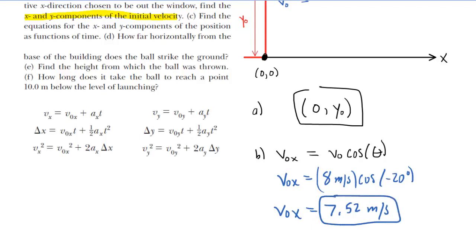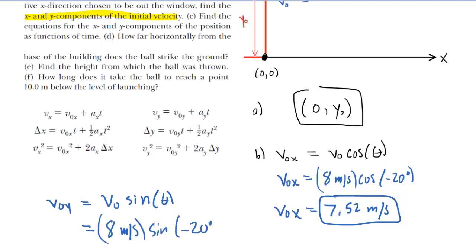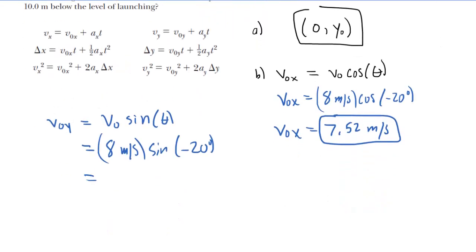We also need the initial y-velocity. It's a similar equation: the initial y-velocity will be the initial speed multiplied by the sine of the same angle. We'll do 8 meters per second multiplied by the sine of negative 20 degrees. When we punch this into our calculators, we will end up with negative 2.74 meters per second. This would be the correct answer along with the other value for part B.